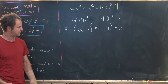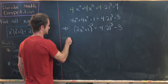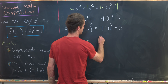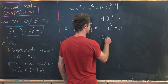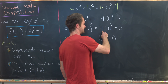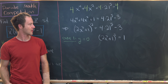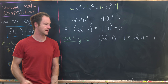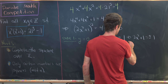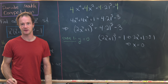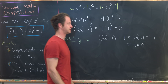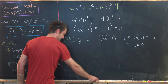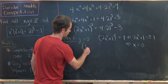Now let's look at the first few cases. Case 1: y equals 0. Then 21 to the 0 is 1, so 2x squared plus 1, quantity squared, equals 4 minus 3, which is 1. That means 2x squared plus 1 equals plus or minus 1. The only solution is x equals 0, occurring when the right hand side is plus 1. The minus 1 case gives no real solution. So our first solution is the ordered pair (0, 0).